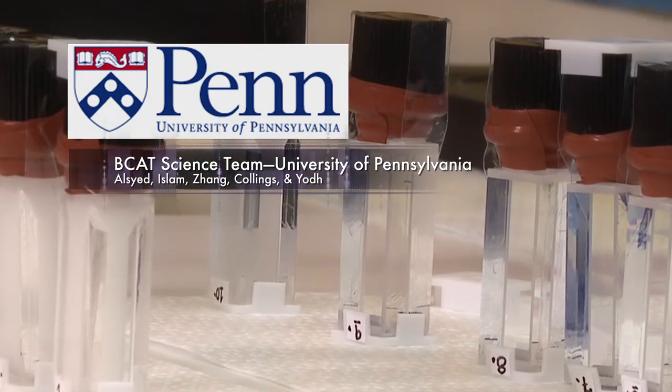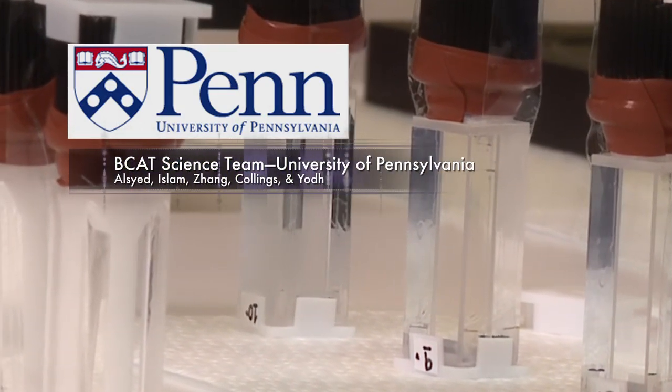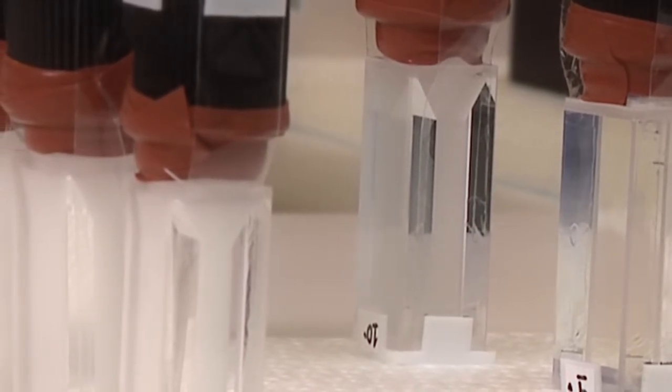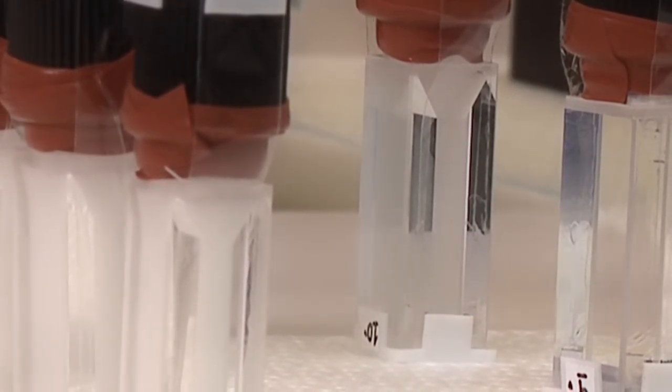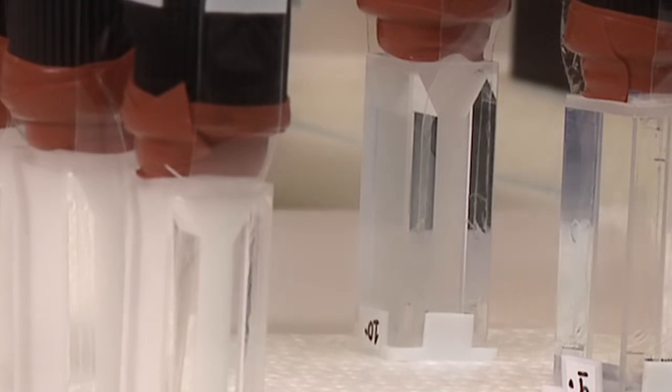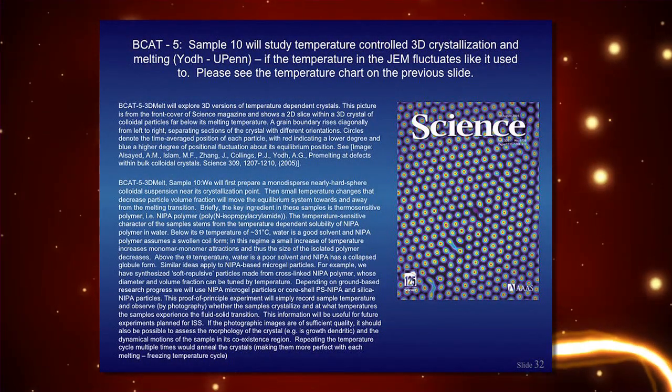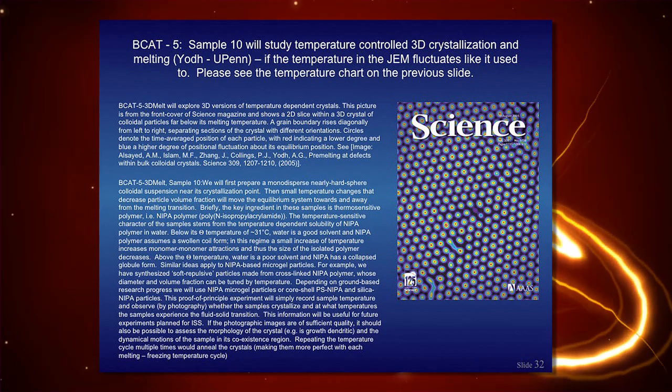And this last sample is from UPenn, Arjun Yod's group, where they were actually looking at how if you can make crystals from particles that change size with temperature, you can raise the temperature and melt them and then cool it and let it recrystallize. If you keep repeating that cycle, it anneals. And every time it does that, the particles are closer to where they'd have to be to make a perfect crystal. That's actually quite exciting.